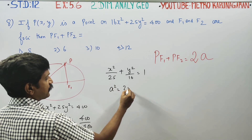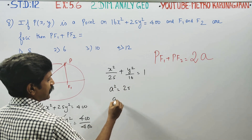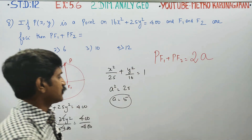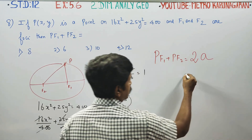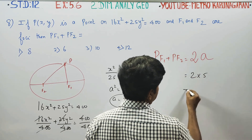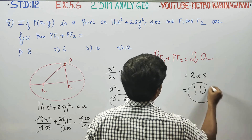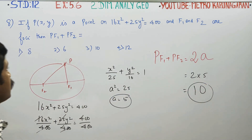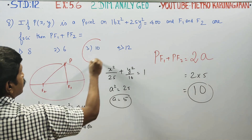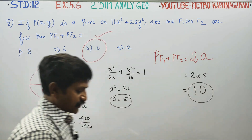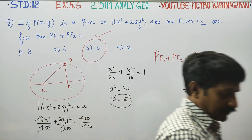The biggest number is always a², so a² = 25, therefore a = 5. Applying the formula: 2 times a = 2 times 5 = 10 units. Your answer is 10 units, which corresponds to option number 3. Thank you.